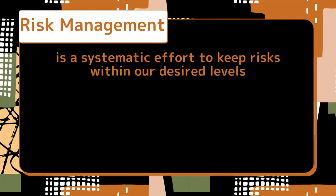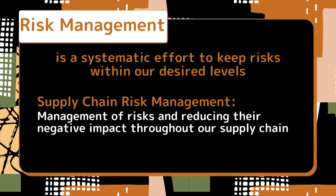Moving forward, let us briefly explain risk management. In very simple words, it is a systematic effort to keep our risks within our desired level. If we apply the same to supply chain, then supply chain risk management means management of risks and reducing their negative impact throughout our supply chain. The focus is identifying possible threats and minimizing their impact to ensure smooth operation. For attaining this objective, we need to increase collaboration and communication among all supply chain partners. The three main goals for this effort are: